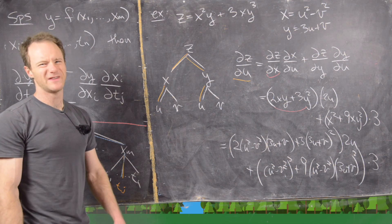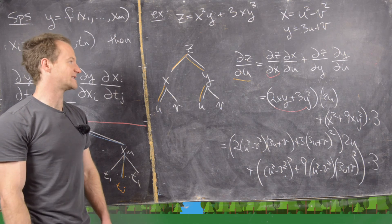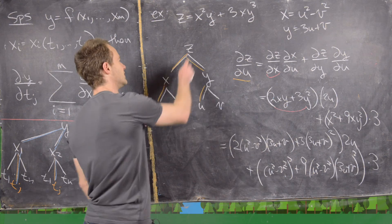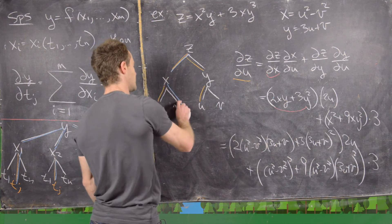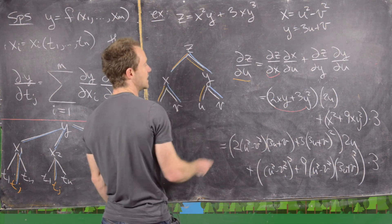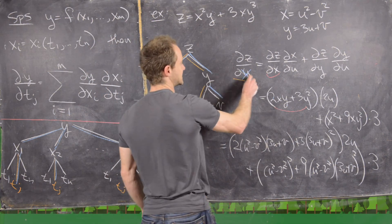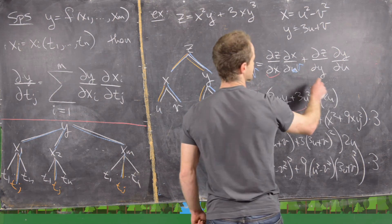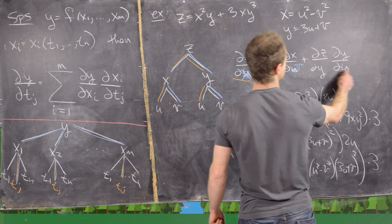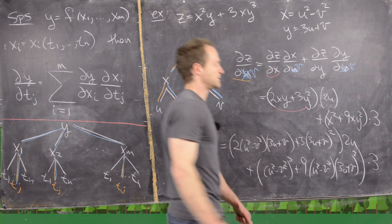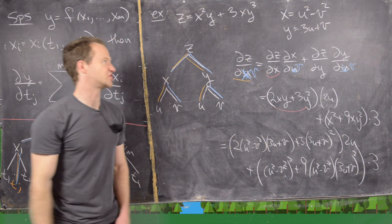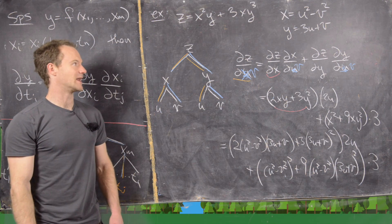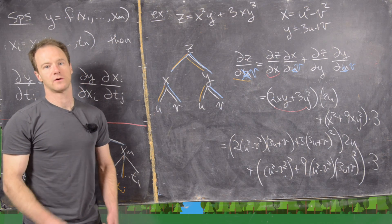I think this is a good place to end it. If you wanted to take the derivative of z with respect to v, we get the same structure — we just take these partials with respect to v at the end, which changes the calculation but not in a very difficult way.